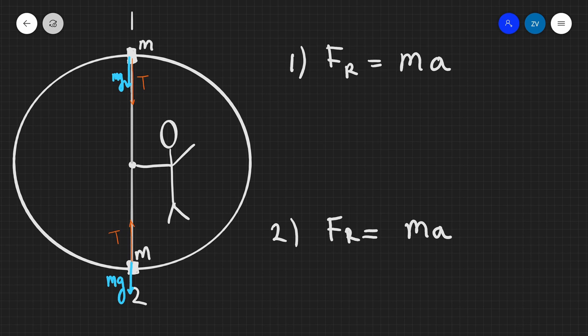Now the resultant force is the vector sum of the two forces. Now in the first case, in position one, mg and the tension are acting in the same direction. So we're just going to go ahead and add them. So the resultant force is going to be equal to mg plus the tension. That's going to equal Ma.